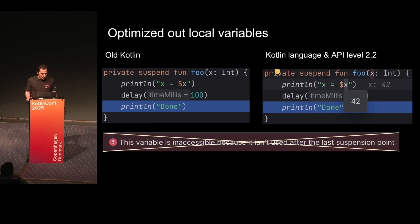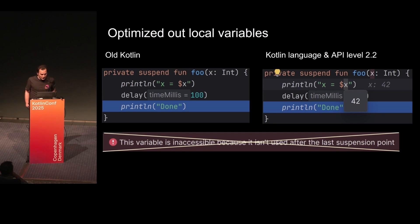Another problem that was solved quite recently is optimized-out variables. In old Kotlin versions, you might pause on the last call and not see any local variables or parameters. If you tried to evaluate something, you'd likely get a message: 'this variable is inaccessible because it isn't used after the last suspension point.' But in recent Kotlin versions starting from 2.2, this problem is solved — you need to update your Gradle and specify that you're using Kotlin language version 2.2 or higher.